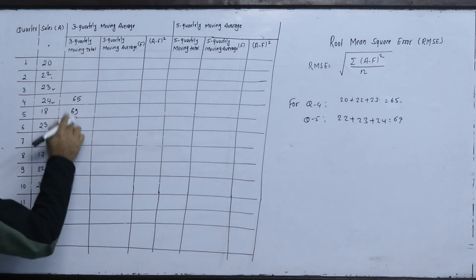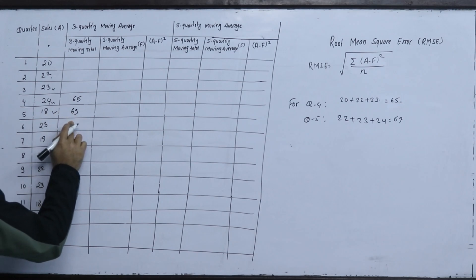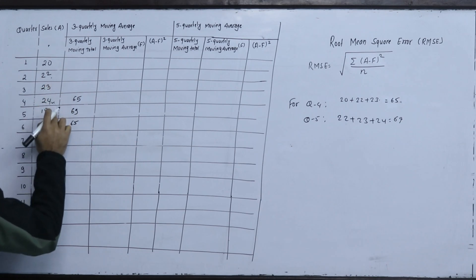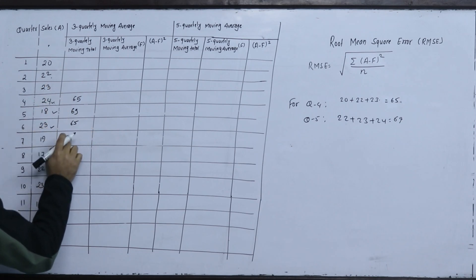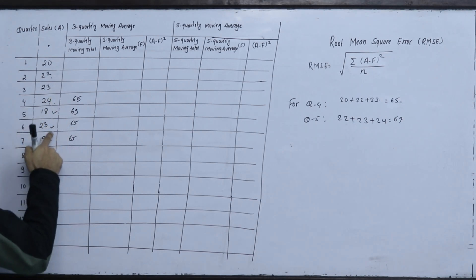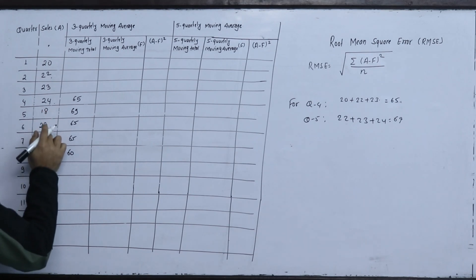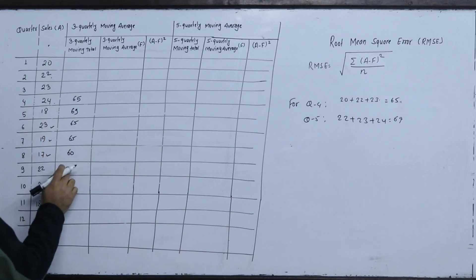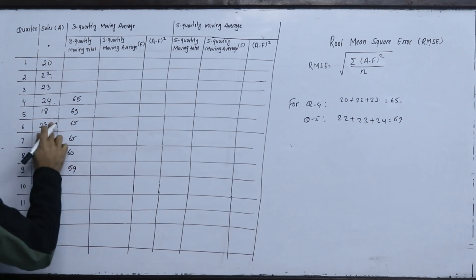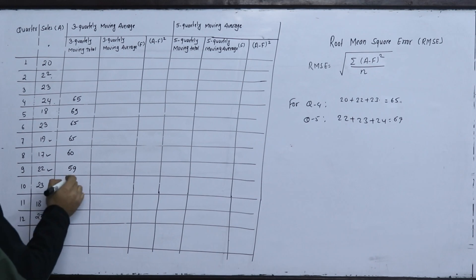Continuing the 3-quarterly moving totals: 23, 24, 18 gives 65. Then 24, 18, 23 gives 65. Then 18, 23, 19 gives 60. Then 23, 19, 17 gives 59. Then 19, 17, 22 gives 58.